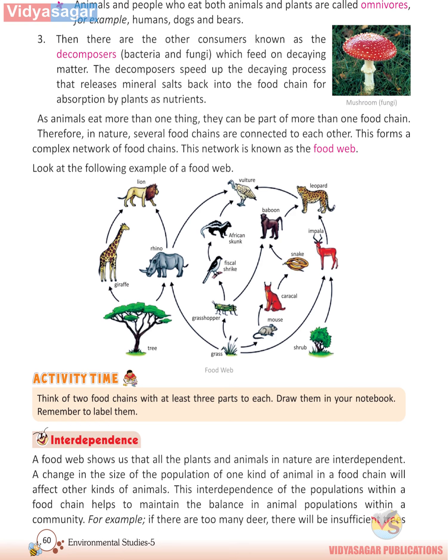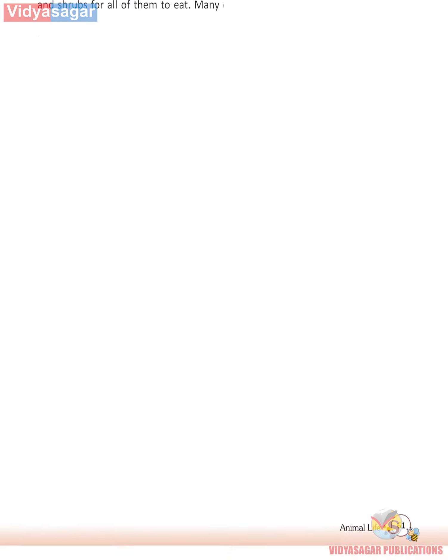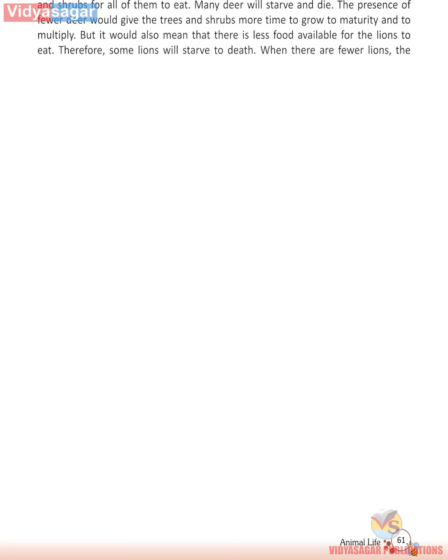For example, if there are too many deer, there will be insufficient trees and shrubs for all of them to eat. Many deer will starve and die. The presence of fewer deer would give the trees and shrubs more time to grow to maturity and multiply, but it would also mean less food for lions. Therefore, some lions will starve to death. When there are fewer lions, the deer population will increase.